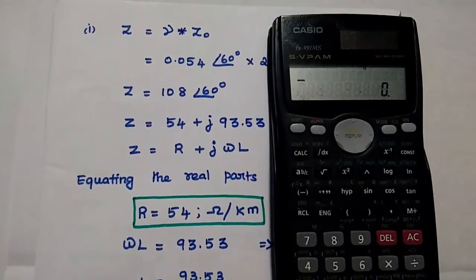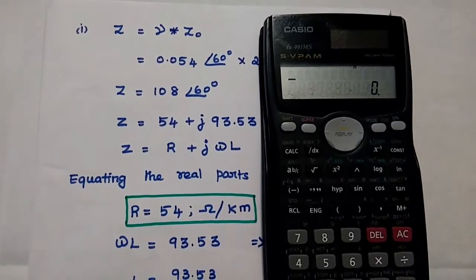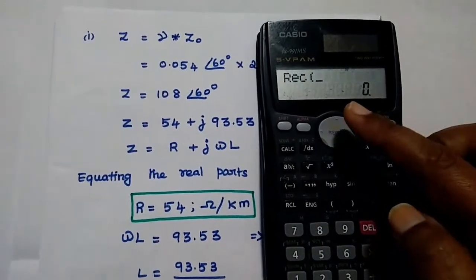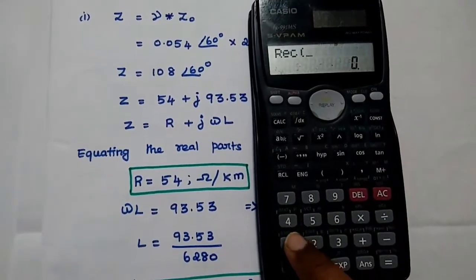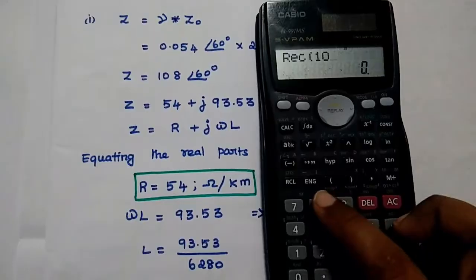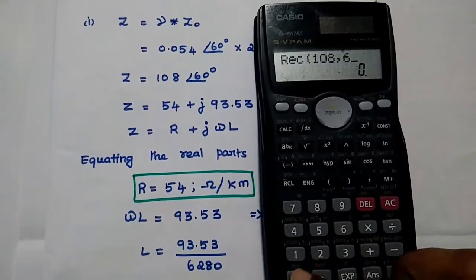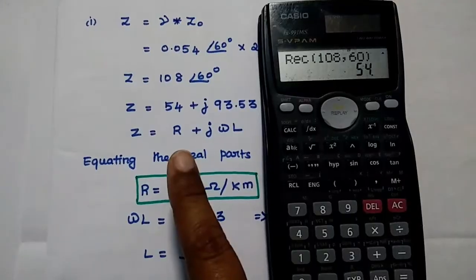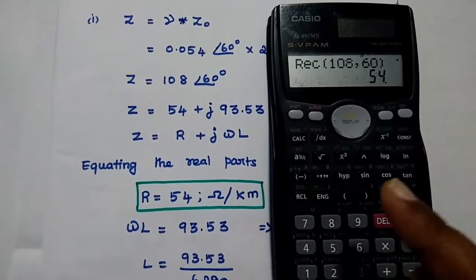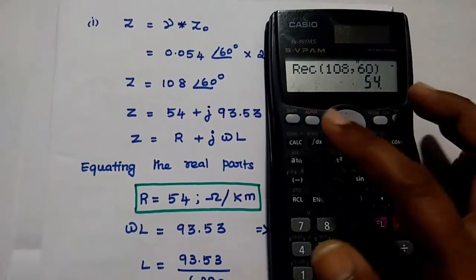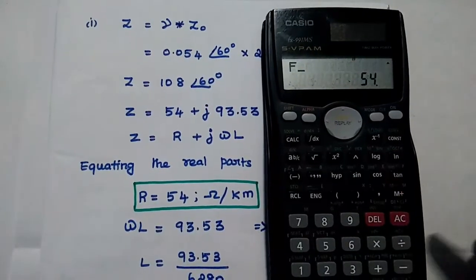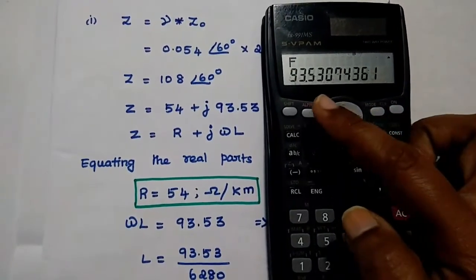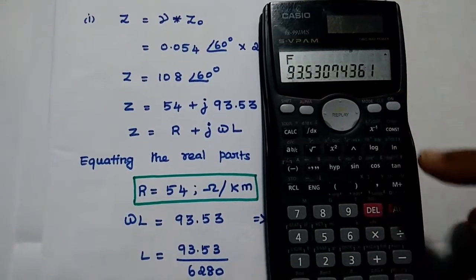To convert polar form to rectangular form using the calculator, press shift and then minus. You will see the rectangular symbol with an open bracket. Type the magnitude value 108, place a comma, then the angle value 60, and close the bracket. Press equal to get the real term as 54. To get the imaginary value, press alpha and then tan, and press equal. The imaginary value is 93.53.